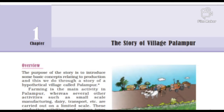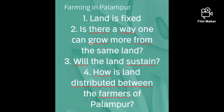Hello children. Last week we learned about the meaning and important factors of production. We also learned in detail about farming in Palampur up to point number four. To refresh our memory: number one, land is fixed; number two, ways to grow more from the same land; number three, will the land sustain; and number four, how is land distributed between the farmers of Palampur.